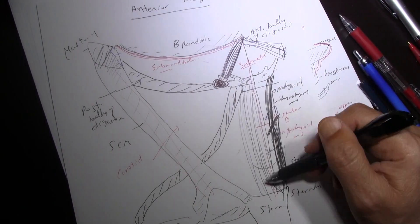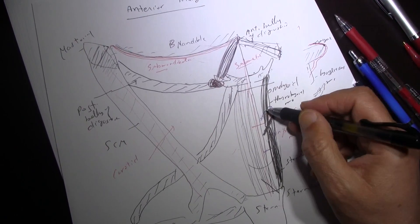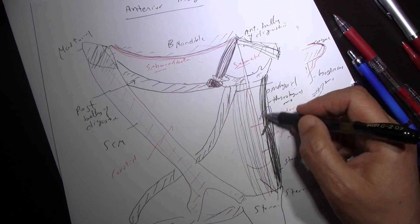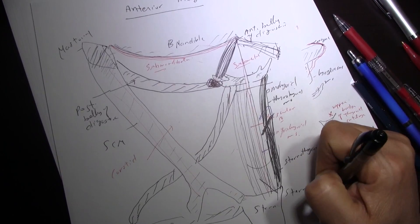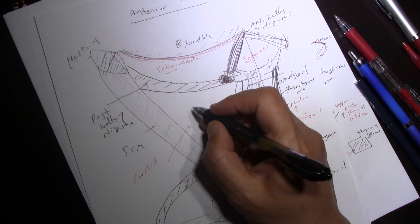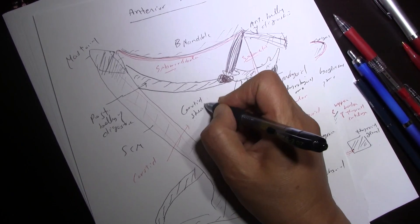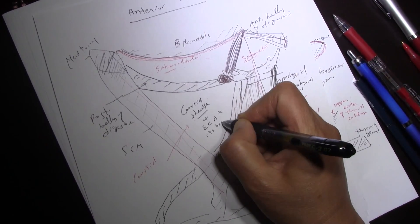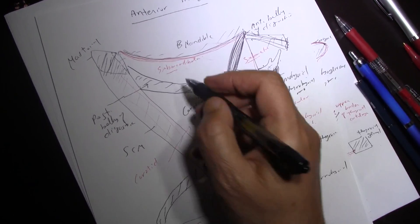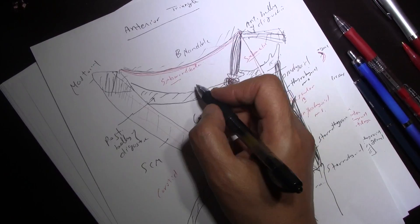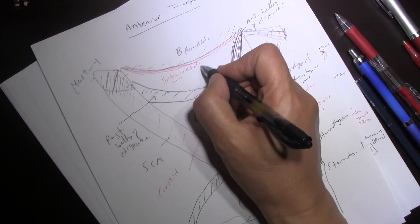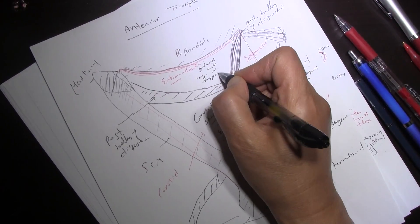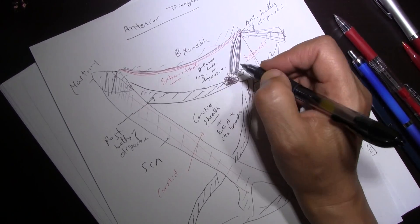So basically you have four infrahyoid muscles: omohyoid and sternohyoid are superficial, then sternothyroid and thyrohyoid are deep. These muscles move the hyoid bone down during swallowing. The sternothyroid and thyrohyoid can also move the thyroid cartilage — part of the larynx — during swallowing. The carotid triangle contains the carotid sheath plus the external carotid artery and its branches. The submandibular triangle contains the submandibular gland, submandibular lymph nodes, lingual nerve, and hypoglossal nerve.